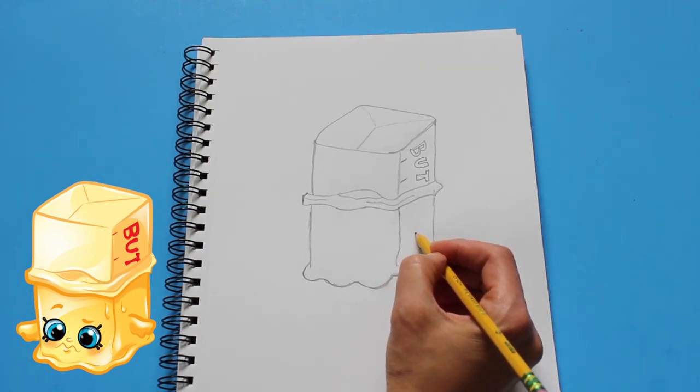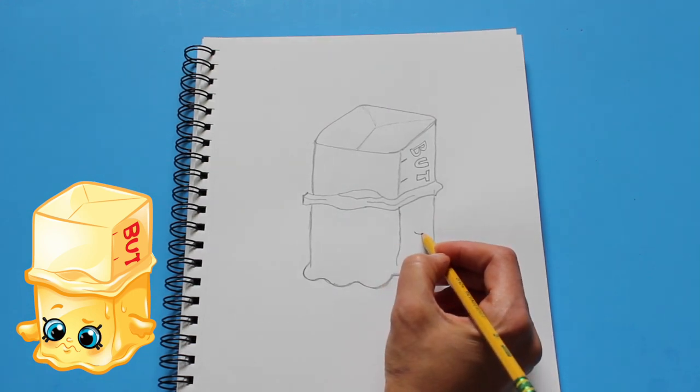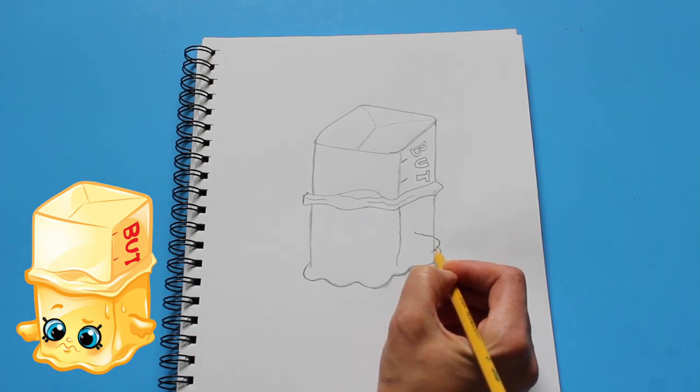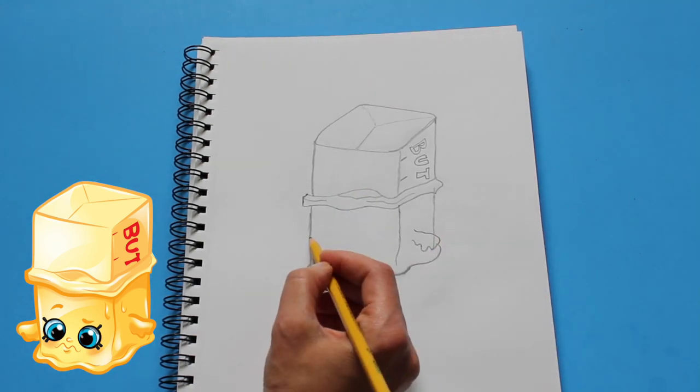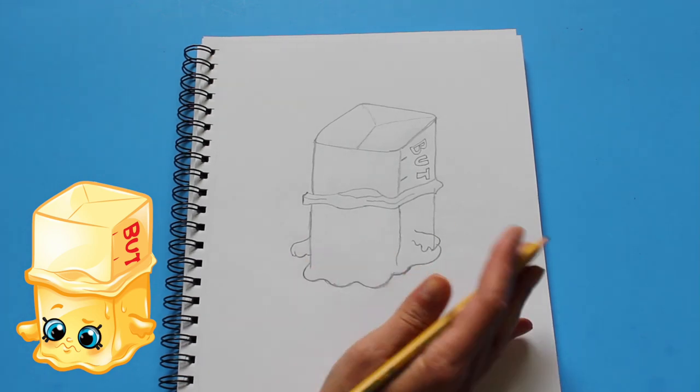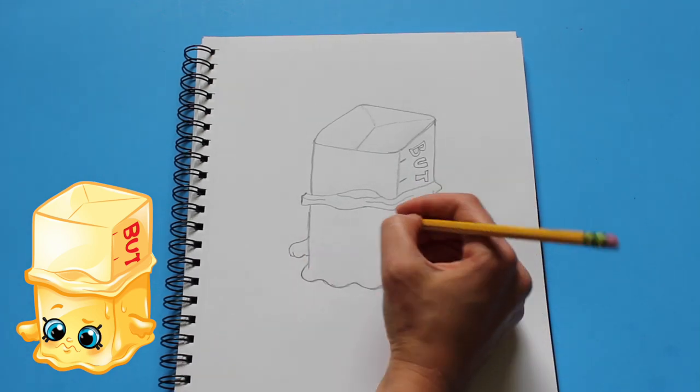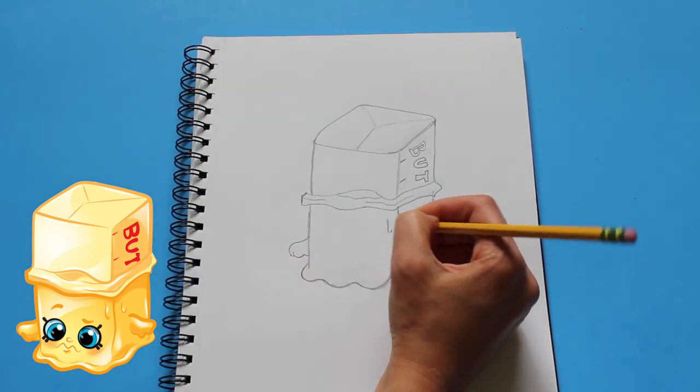Alright, so next come the hands. They're melted too, so we're just gonna draw some curved lines. I'm gonna add some more effects to it. We've got kind of a hook here because the butter is melting.